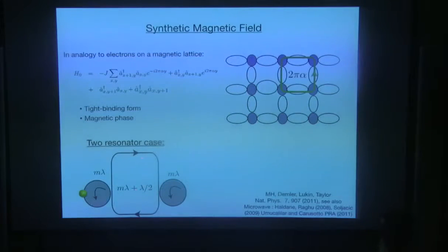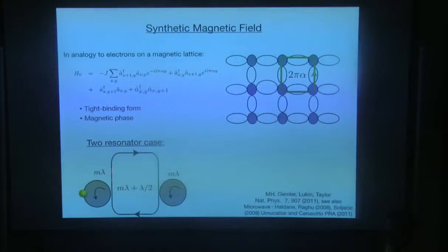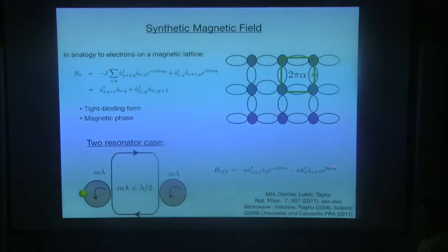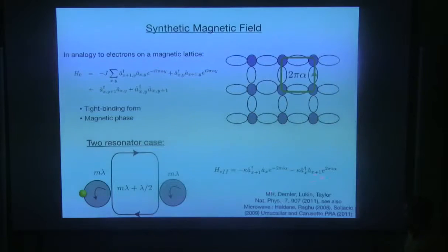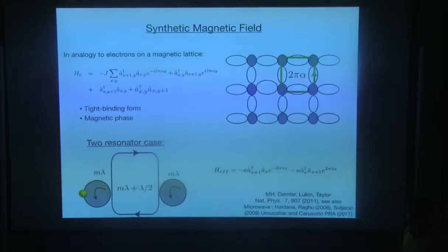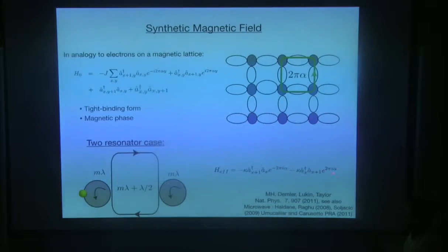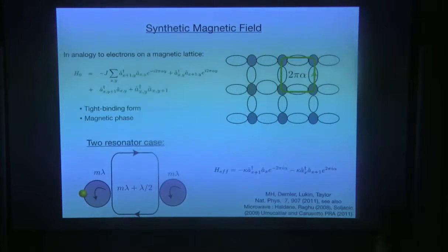If we put this resonator in an asymmetric way, the top one will travel more than the bottom one. So in the quantized form, when we hop from left to right we pick up some phase, and when we hop from right to left we pick up the opposite phase. By Hermiticity of the Hamiltonian, these phases should be equal and exactly opposite to each other. That's not surprising because the total length of the resonator is set to be m*lambda plus lambda/2.